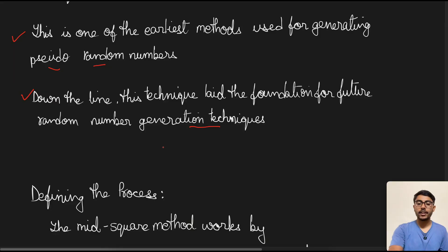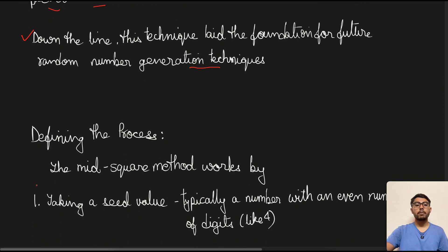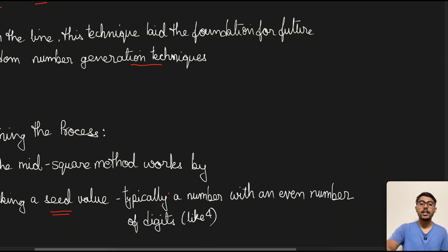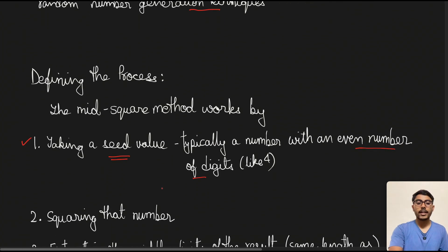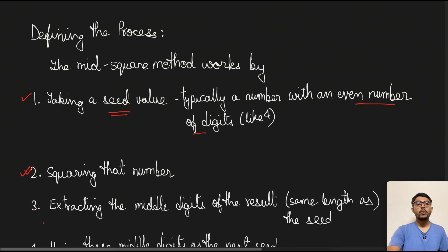So first we'll define the process. Mid square method works by taking the seed value, and this is typically a number with an even number of digits. In our case it is 4. So remember that the seed value for mid square method is mostly an even number. We'll see why is it so down below. Next, we need to square that number, simple squaring. Third, we need to extract the middle digits of the result, same length as the seed. We'll explain this further with an example.